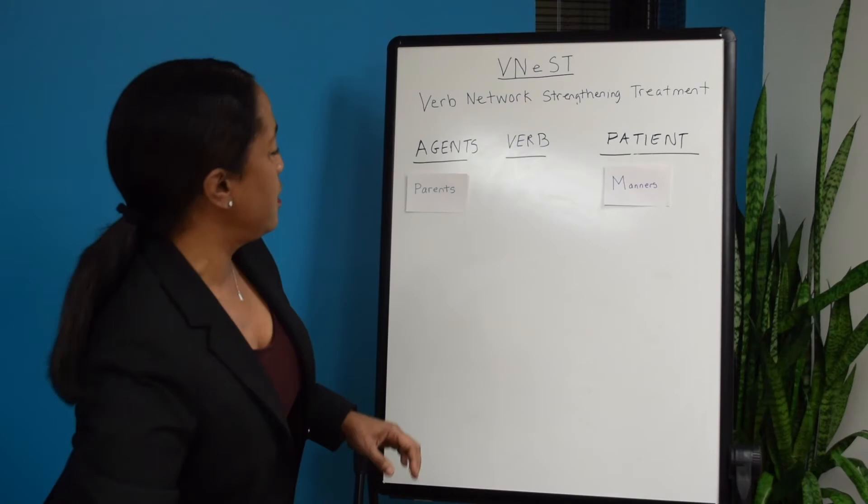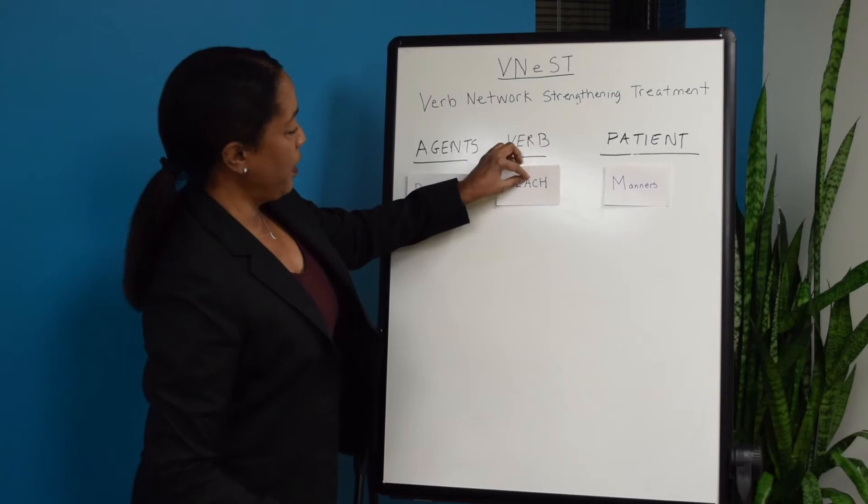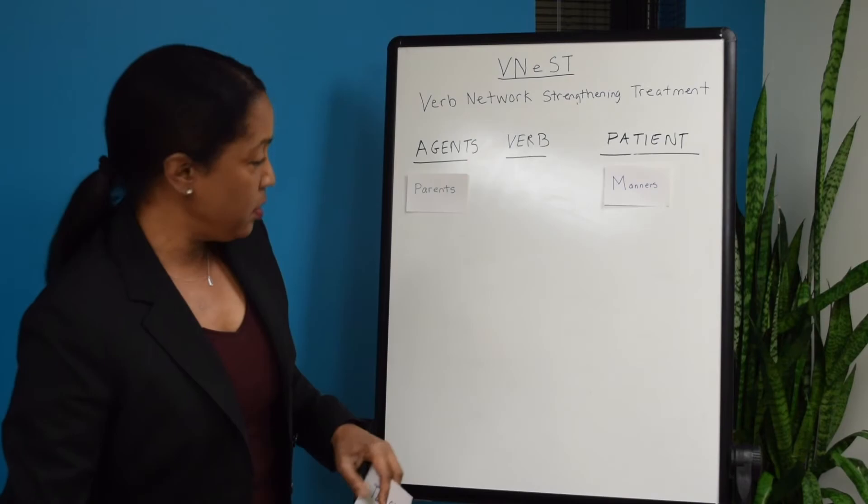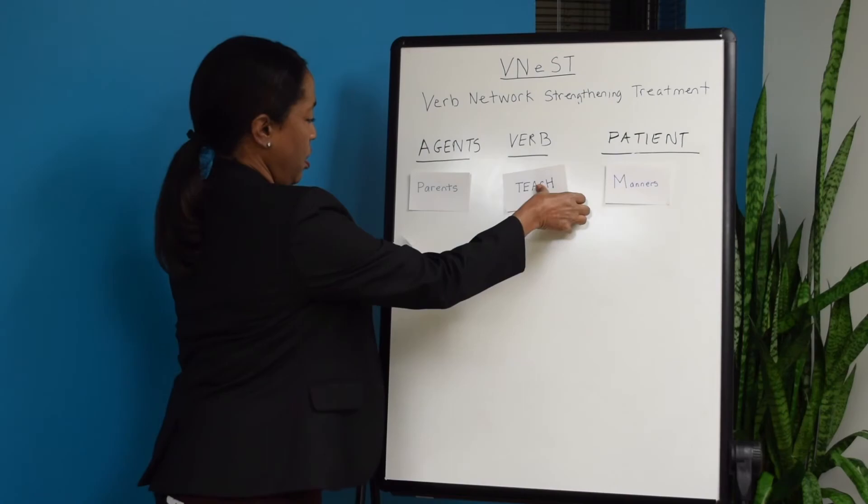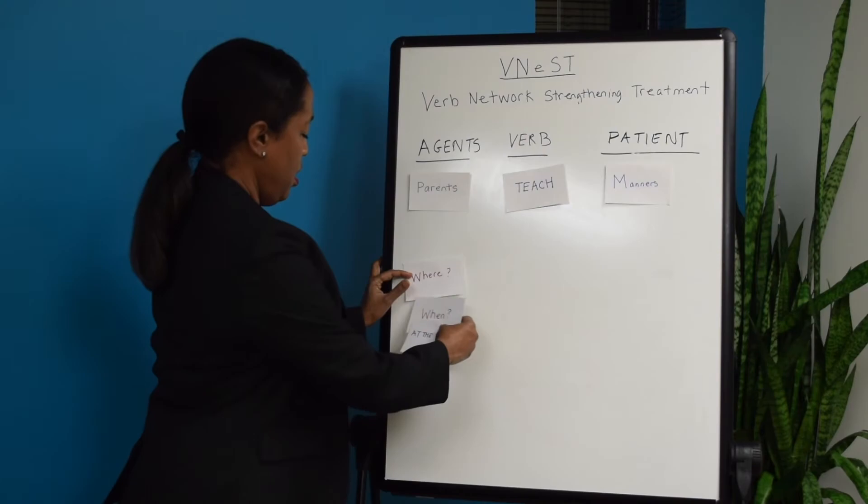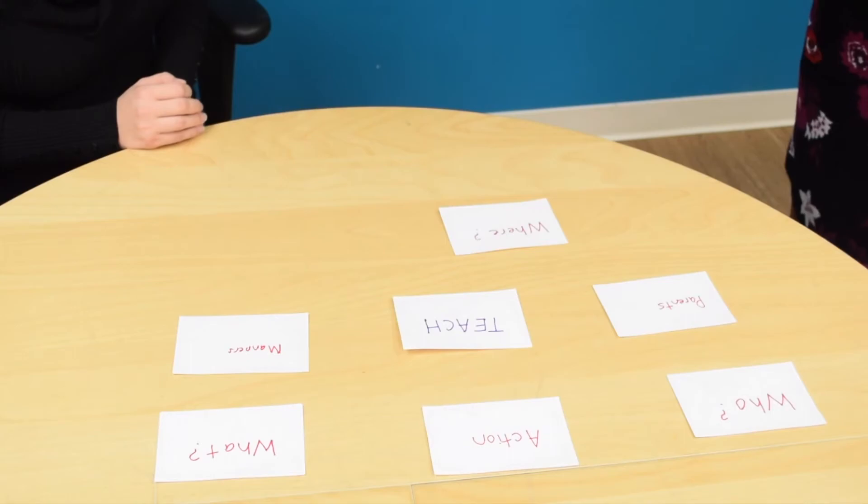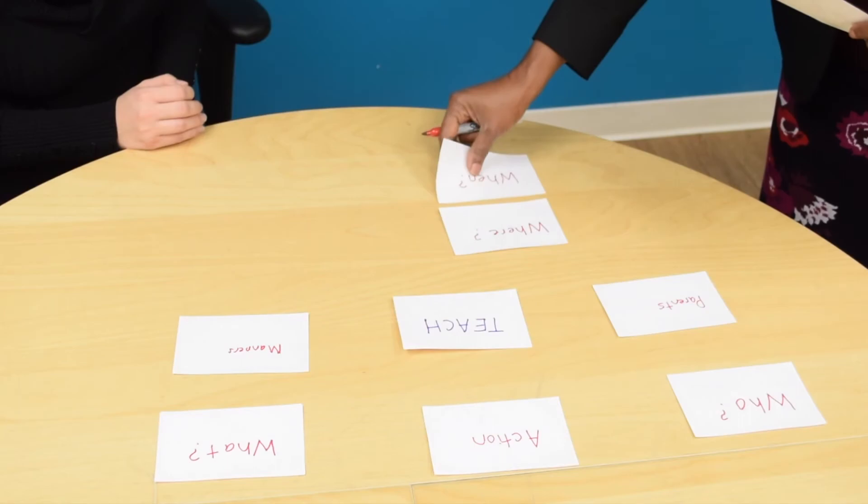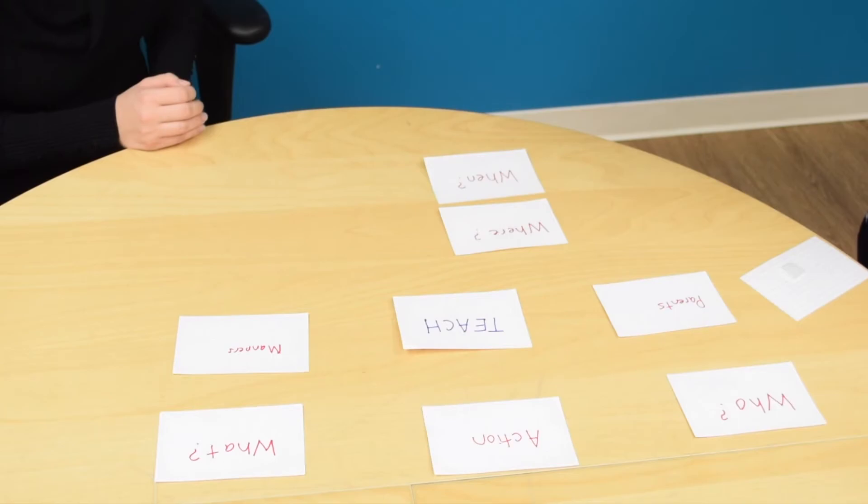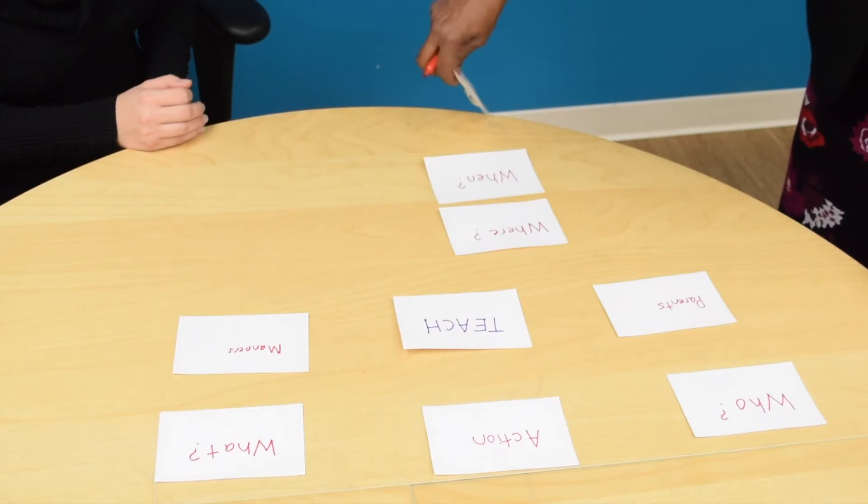I just decided to select one random sentence: parents teach manners. What I would do is ask three additional questions using where, when, and why. Where do parents teach manners? Maybe at the dinner table. When do parents teach manners? When they're eating at dinner. Why do parents teach manners? So they can teach life skills. Thank you.